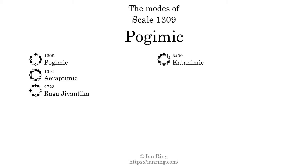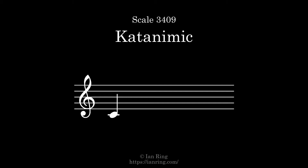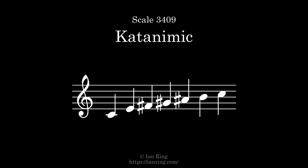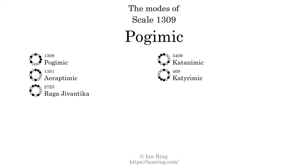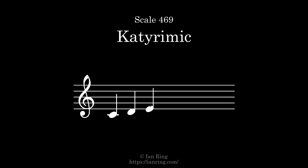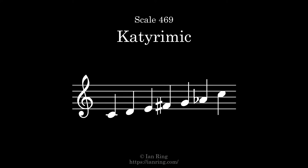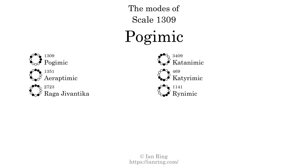The fourth mode is scale 469, also known as Eryptimic. It sounds like this. The fifth mode is scale 469, also known as Eryptimic. It sounds like this. The sixth mode is scale 1141, also known as Eryptimic. It sounds like this.